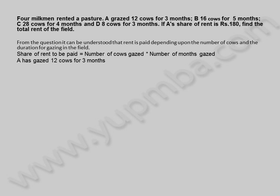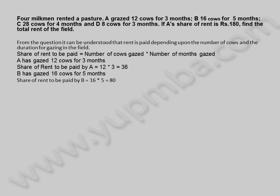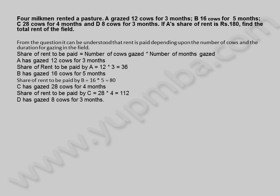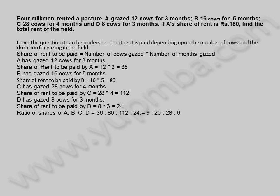A has grazed 12 cows for three months, share of rent to be paid by A is 12 × 3 = 36. B has grazed 16 cows for five months, share of rent to be paid by B is 16 × 5 = 80. C has grazed 28 cows for four months, share of rent to be paid by C is 28 × 4 = 112. D has grazed 8 cows for three months, share of rent to be paid by D is 8 × 3 = 24. Ratio of shares of A : B : C : D = 36 : 80 : 112 : 24, which simplifies to 9 : 20 : 28 : 6.